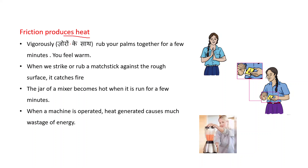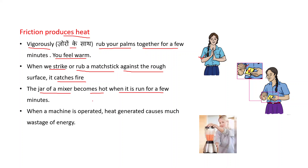Friction produces heat. If you vigorously rub your palms together for a few minutes you feel warm — you do this in winter to get warmth. When we strike a matchstick against a rough surface it catches fire. The jar of a mixer becomes hot when run for a few minutes. When a machine operates, heat generated causes wastage of energy, and to minimize this we need to reduce friction.